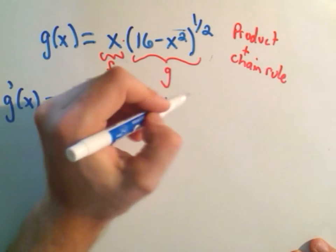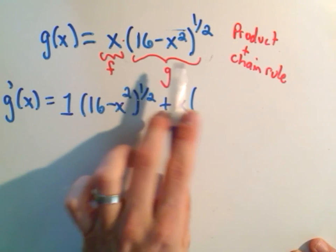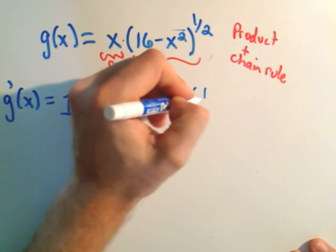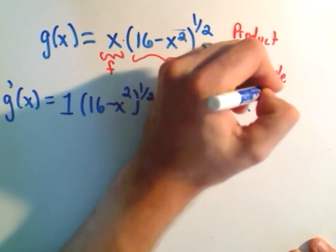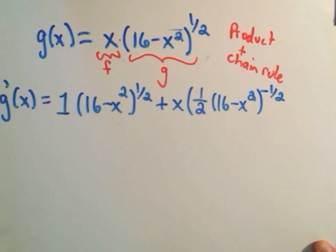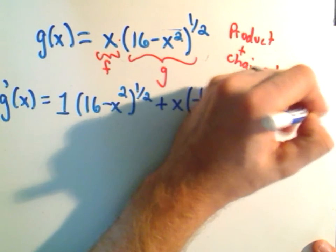Then I leave the x alone, and then I have to take the derivative of the 16 minus x squared to the one-half power using the chain rule. So the one-half will come out front, I leave the inside alone. I've got to take one away, so that I'll make it to the negative one-half power. And then I have to multiply by the derivative of the inside, which is negative 2x.